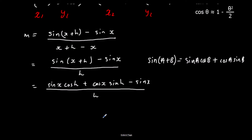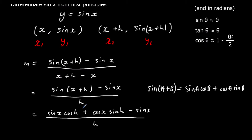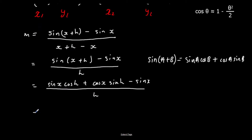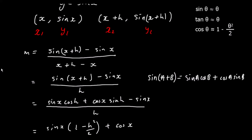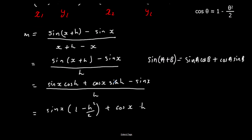Now we're going to use our small angle approximations. Since h is small, cos(h) is approximately equal to 1 minus h squared over 2, and sine(h) is approximately equal to h. So we substitute those in: cos(h) becomes 1 minus h²/2, and sine(h) becomes just h. We still have minus sine(x), all over h.